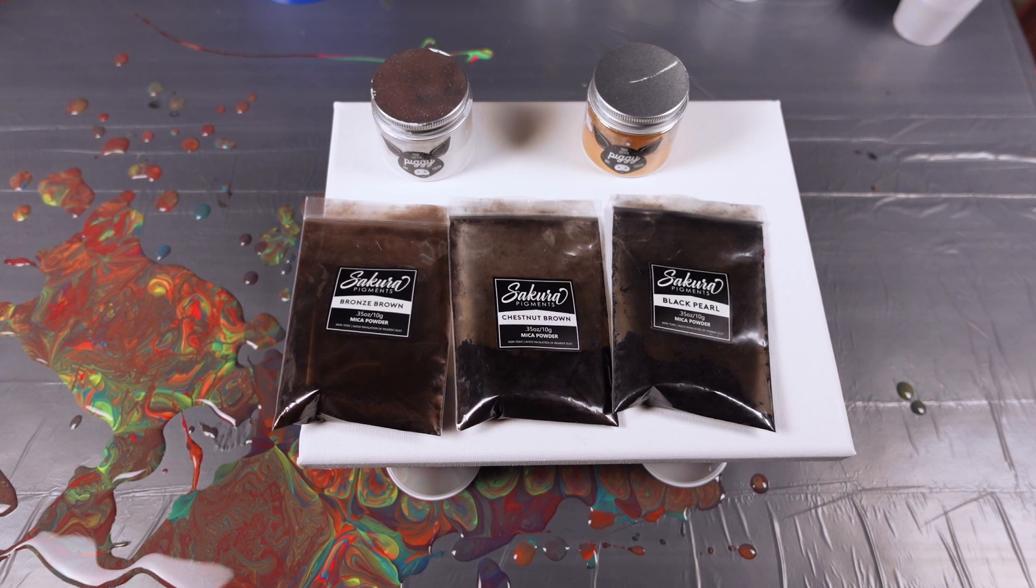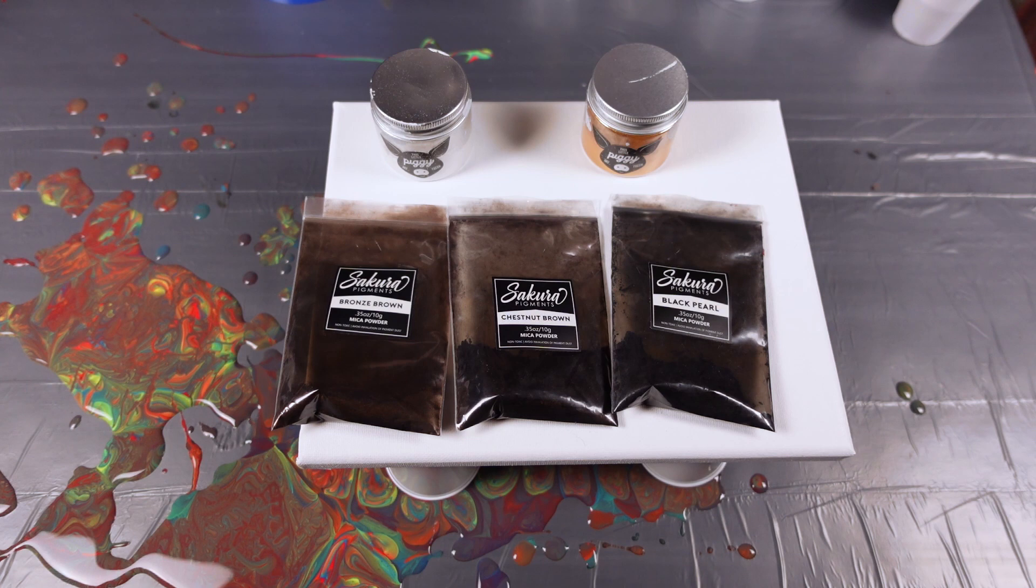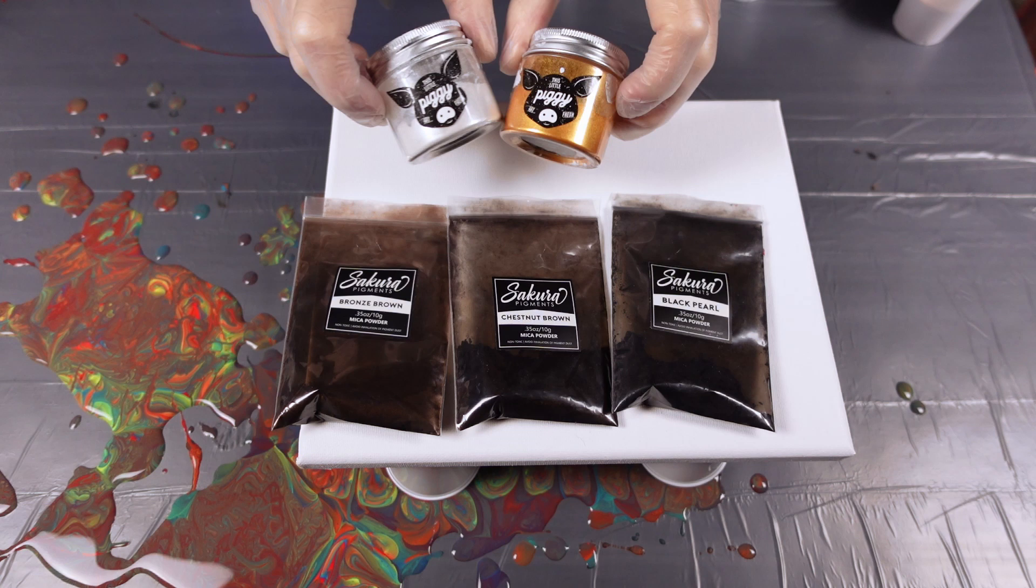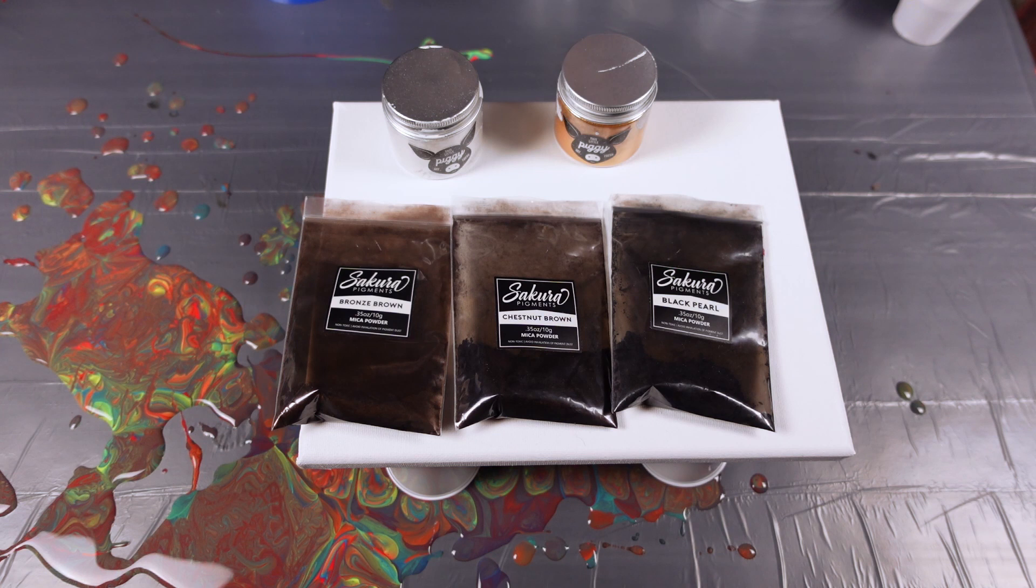Hello my paint pouring friends, welcome back. So you guys know I like mica pigments, right? Today we're going to be doing a ribbon pour with mica pigments. I absolutely love these color combinations with each other. I got a gold, a silver, bronze brown, chestnut brown, and black pearl.